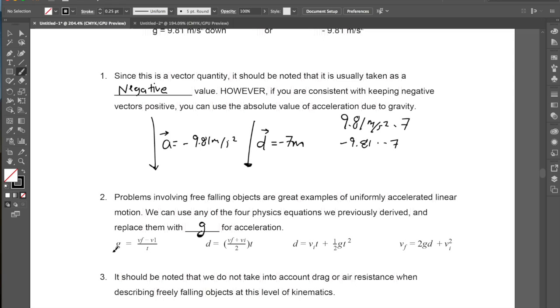So for example, in our acceleration equals a change in velocity over time, we can simply substitute g in there. Same thing with equation C we derived the other day, and equation D we derived the other day. So g can just be used as a substitute for a.